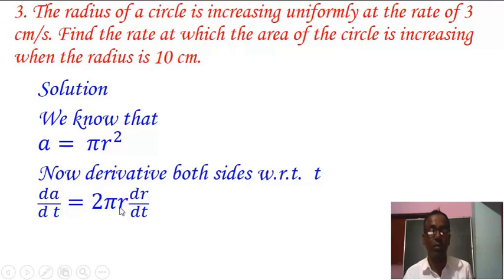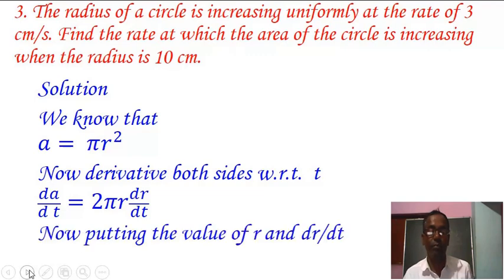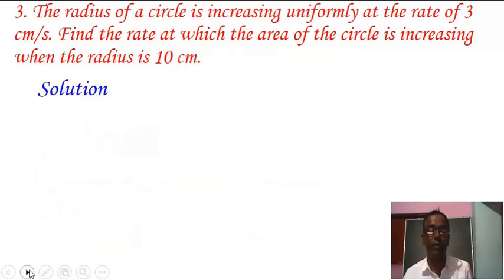Now putting the values of r and dr/dt. So, dA/dt equals 2π times r, where the value of r is 10 cm and the value of dr/dt equals 3 cm per second.